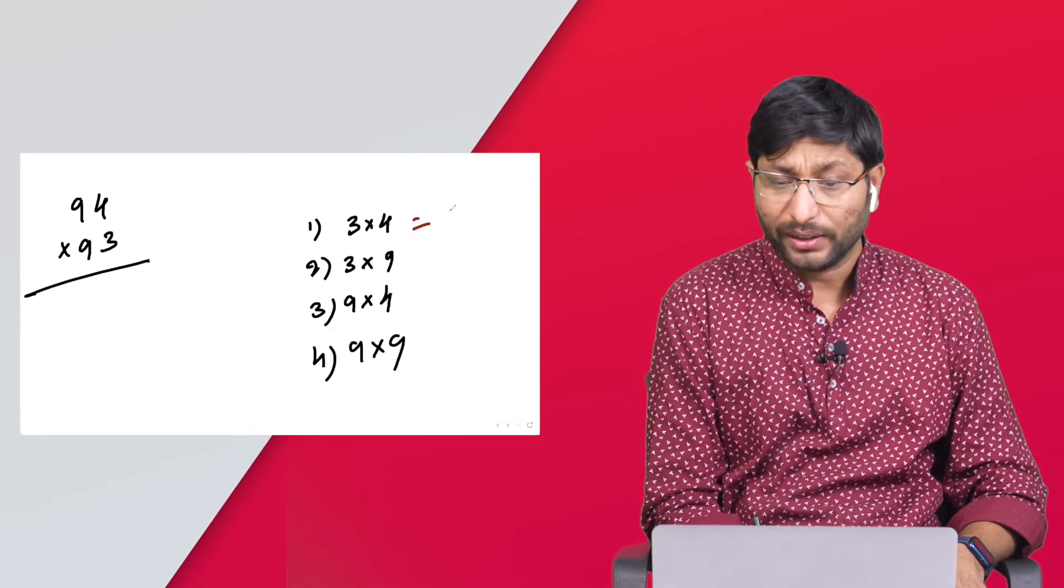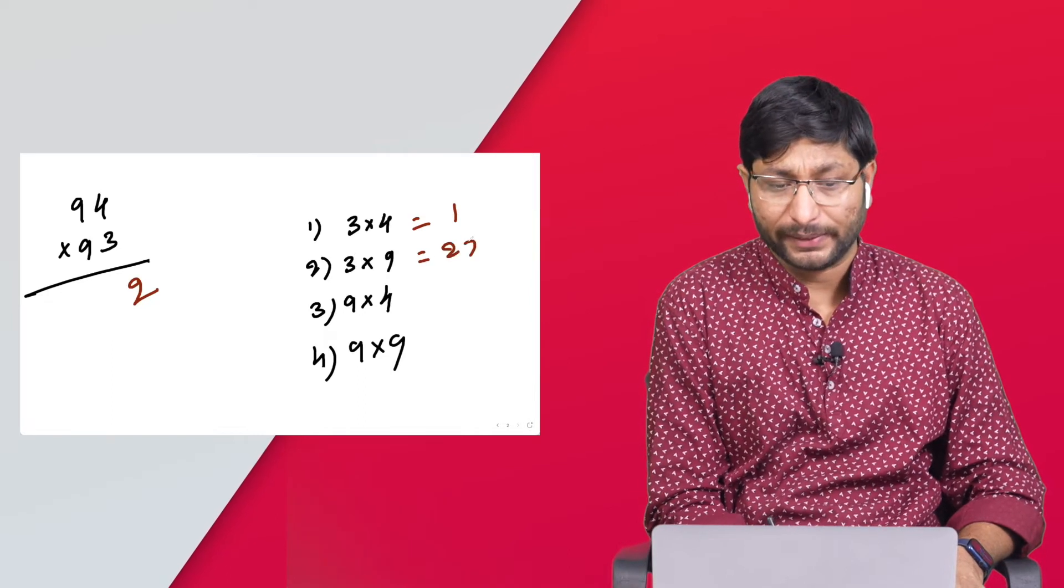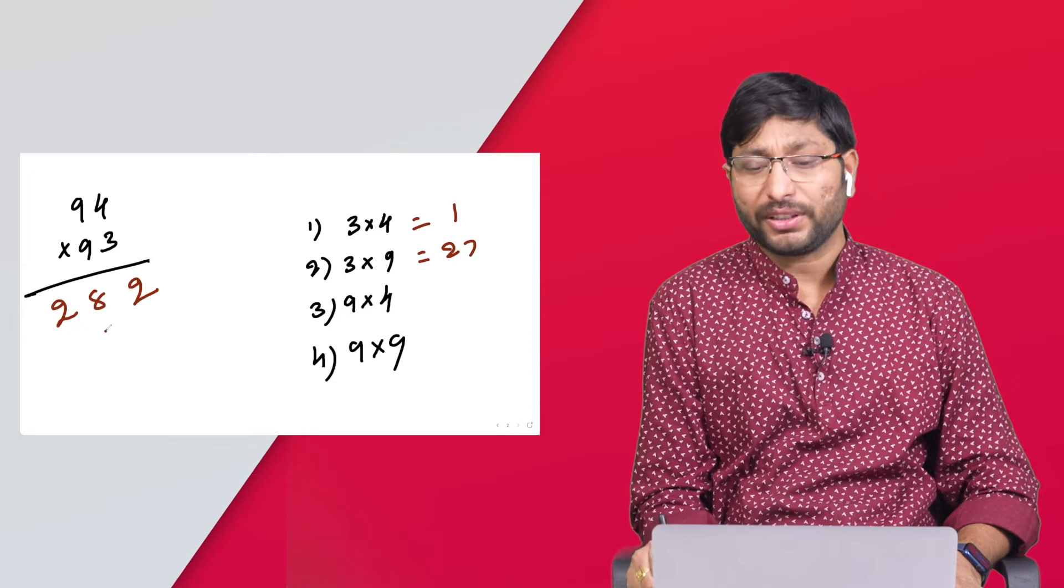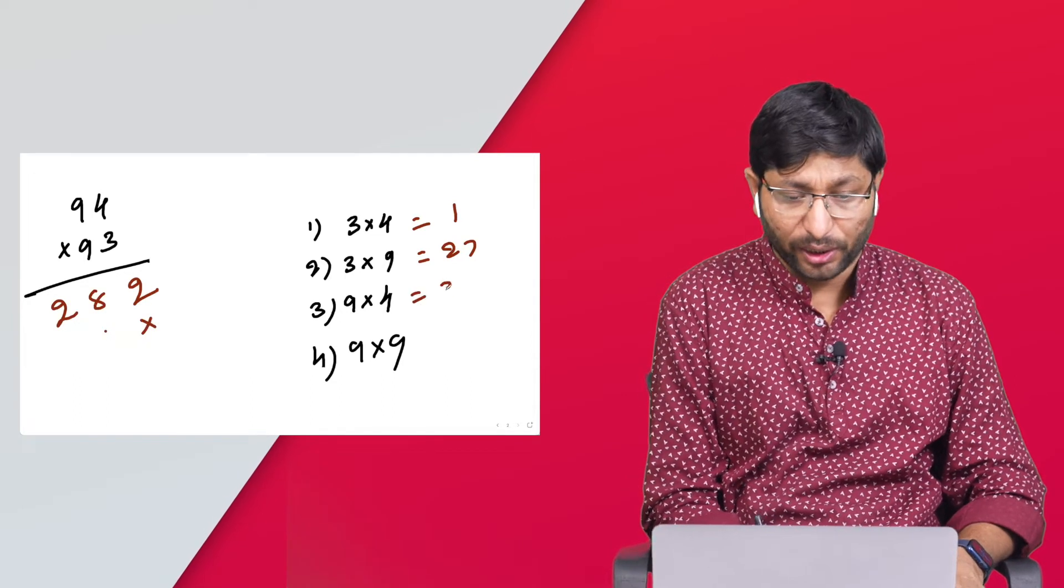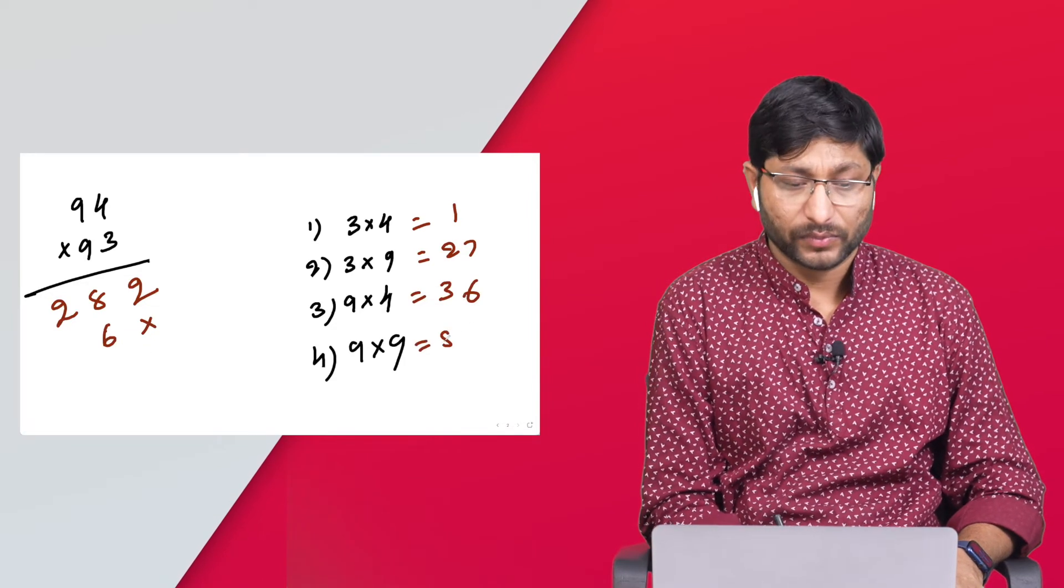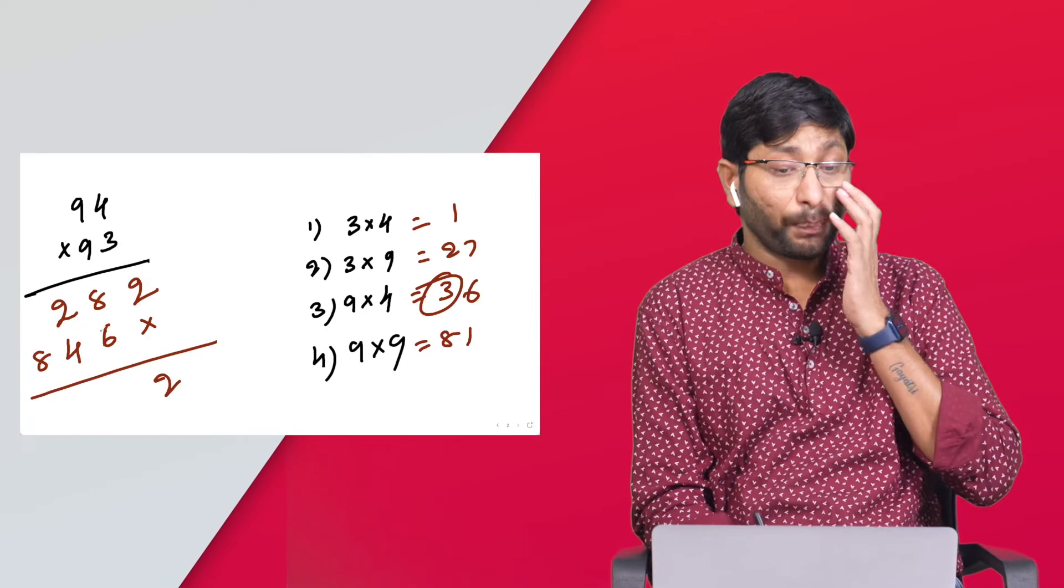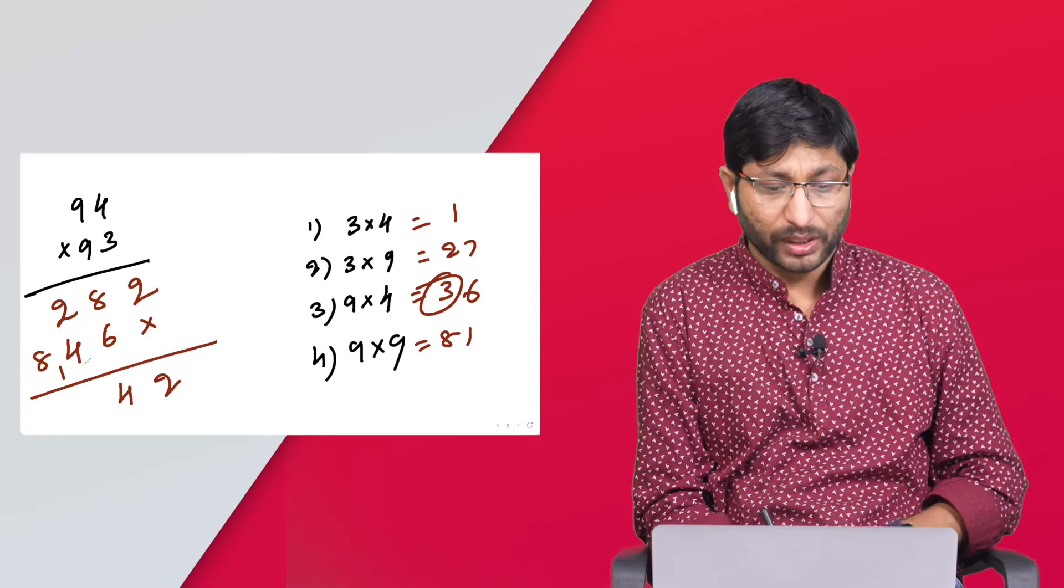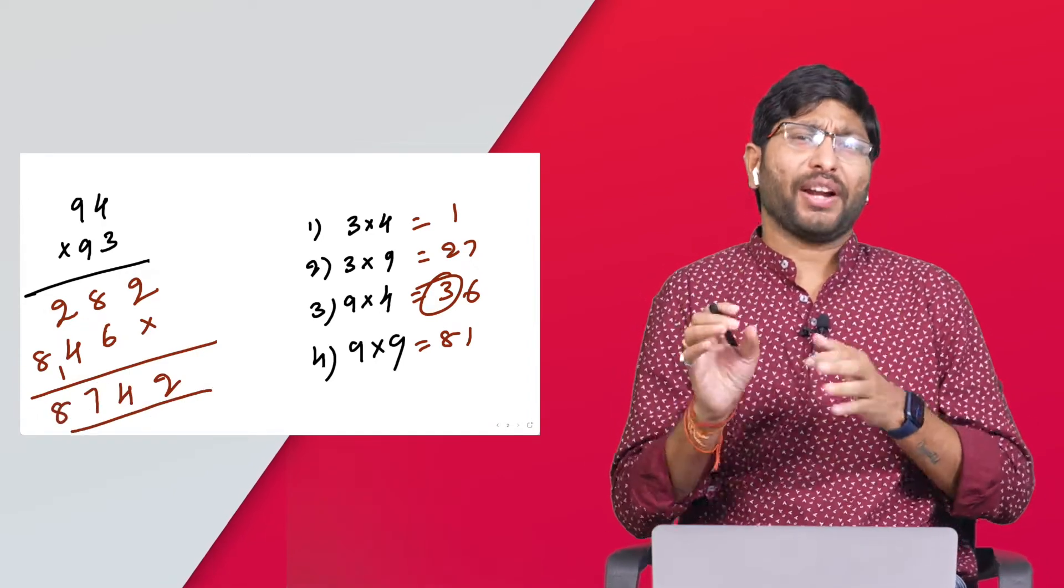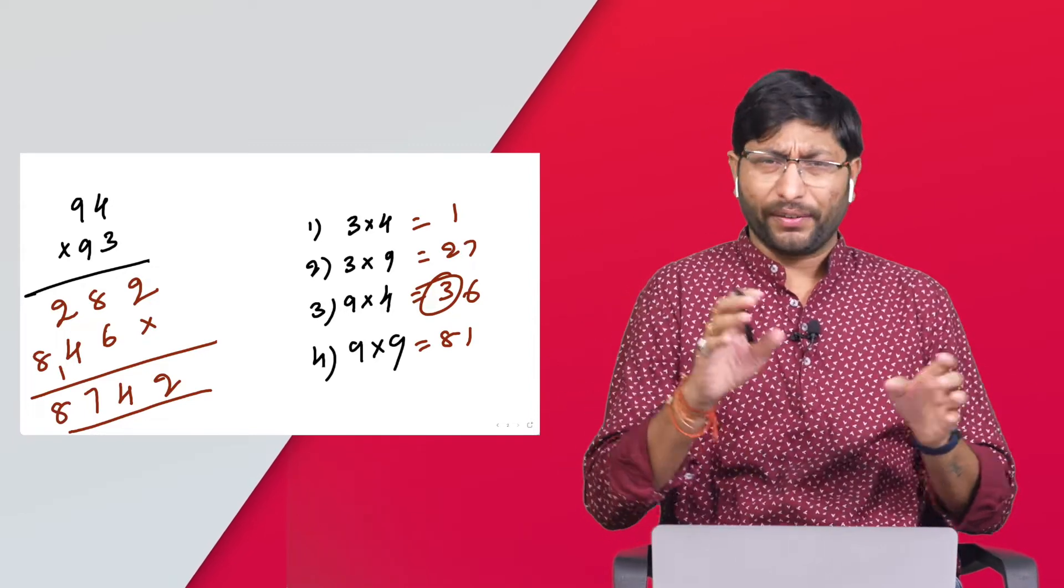Step 1: 3 into 4. Step 2: 3 into 9. Step 3: 9 into 4. Step 4: 9 into 9. In step 1, 3 fours are 12, one and two. Three nines are 27, 27 plus 1 is 28. Next, 9 fours are 36. Nine nines are 81 plus 3 is 84. Two, six, six plus eight is 14, four plus two plus one is seven, and 87.